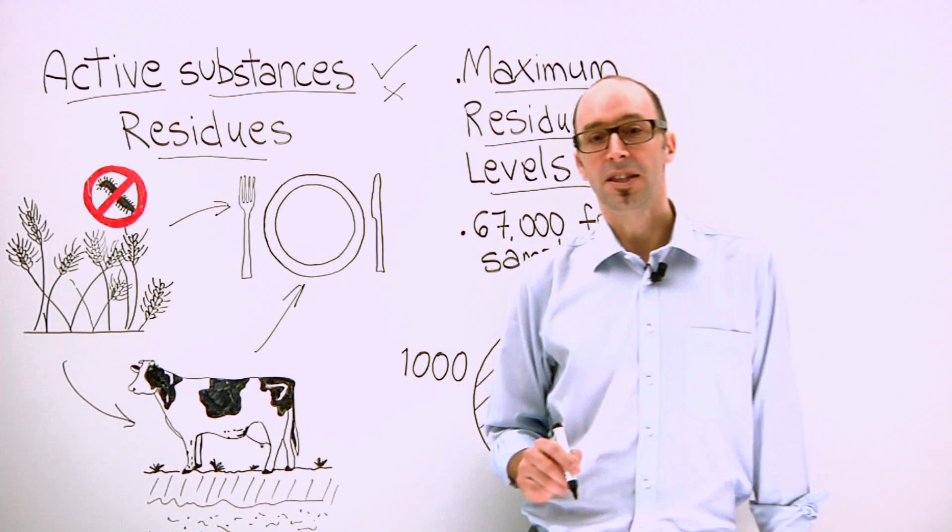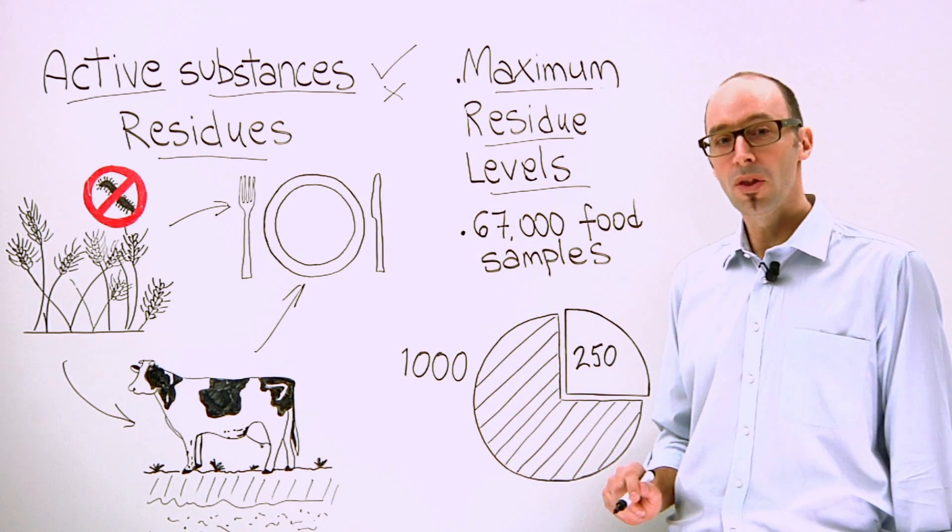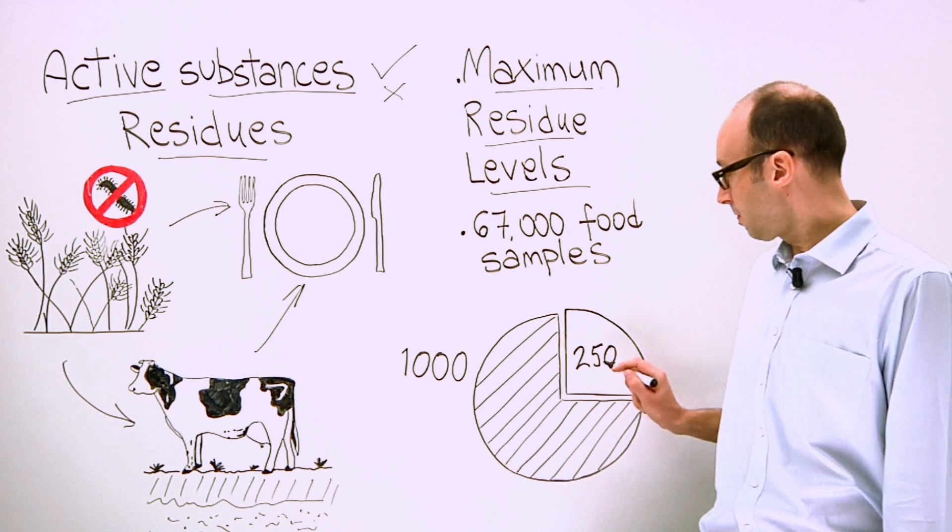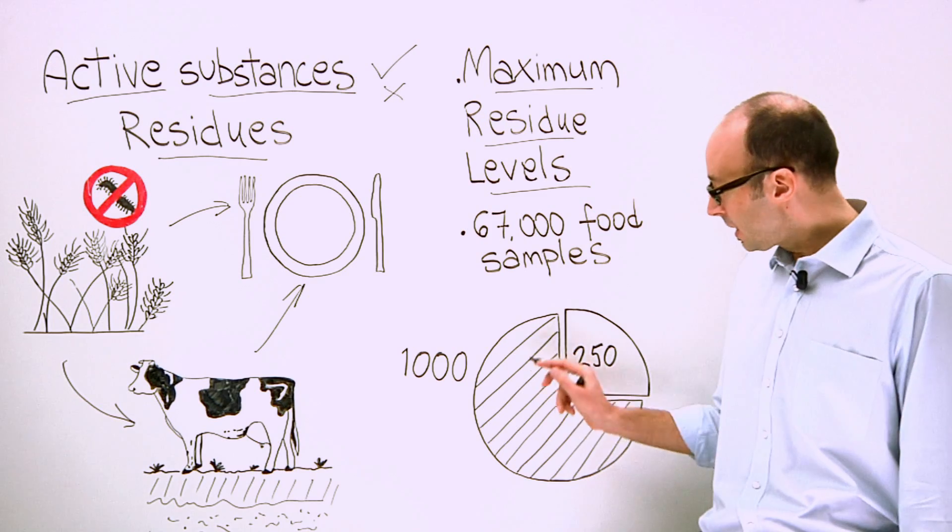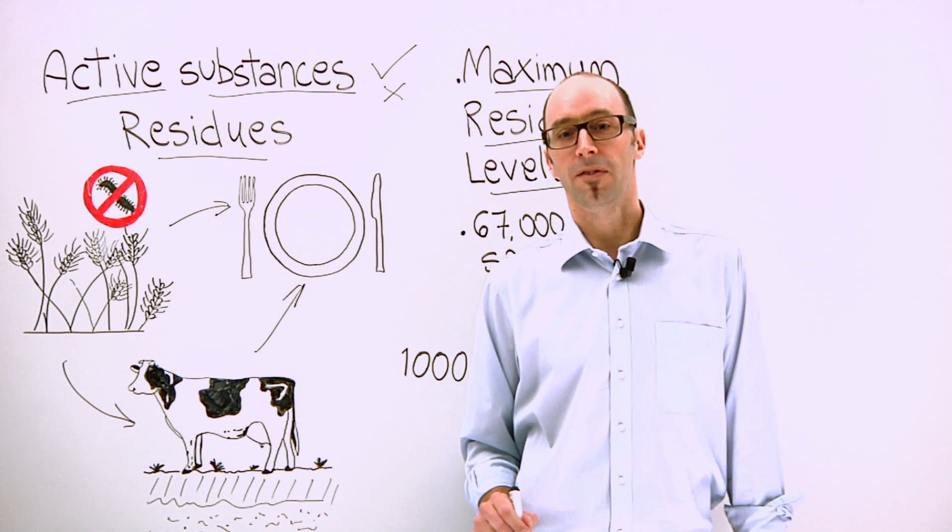In 1993, before the current approval process, there were around 1,000 active substances on the market. Of these, the European Commission approved some 250. The remainder are no longer on the market. This helps ensure the safety of our food.